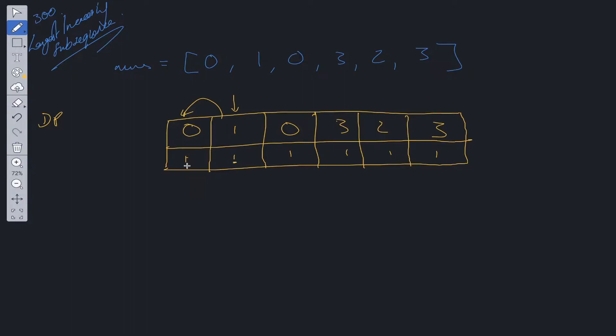Or is it going to be the previous value plus 1, which is equal to 2? It's going to be 2, so let's update this. Let's move on to the next one. Is 0 greater than 1? No. Is 0 greater than 0? No. So we can move to the next value and leave this as 1.